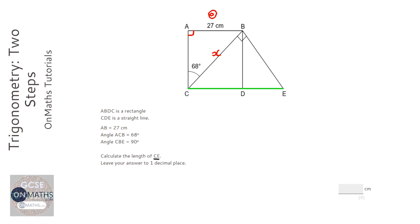So we've got opposite and we've got the hypotenuse, so we're going to use sine. So SOH, so it's going to be sine 68 equals 27 over x.